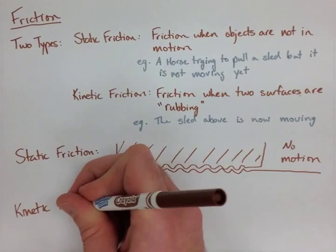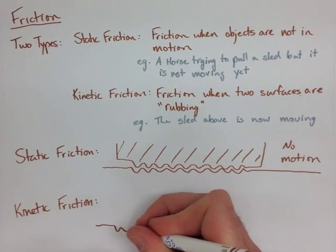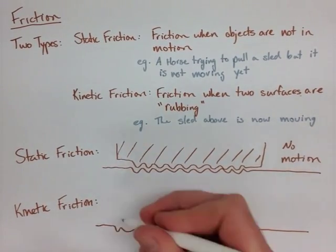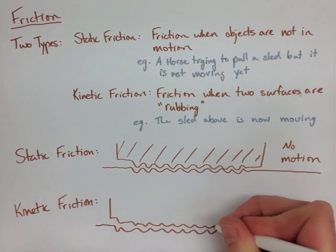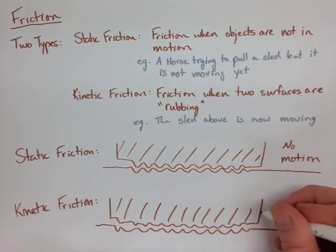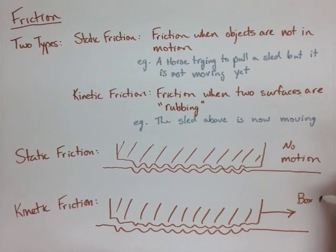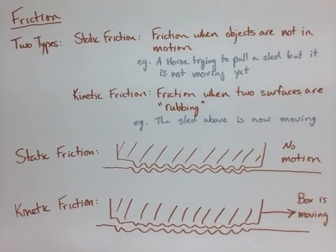With kinetic friction, we have the exact same kind of situation, but instead of the objects fitting in perfectly, the top object just kind of bumps along on top of all those ridges. So it's got some motion, and therefore it's kinetic.